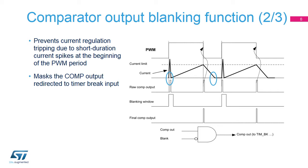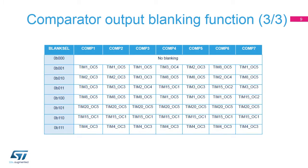Short current spikes caused by activating the power switches can produce false pulses on the comparator output, marked in blue on the diagram. These pulses need to be masked by a blanking window to avoid false fault detection. The blanking window waveform can be generated by one of the timer output channels. The comparator's output can be masked during a blanking time defined by the timer output compare value selected in the blank cell field.